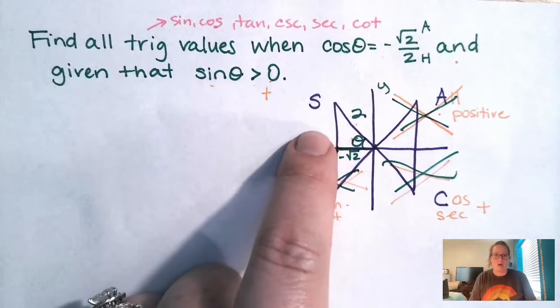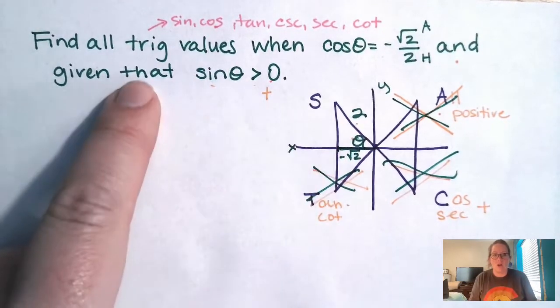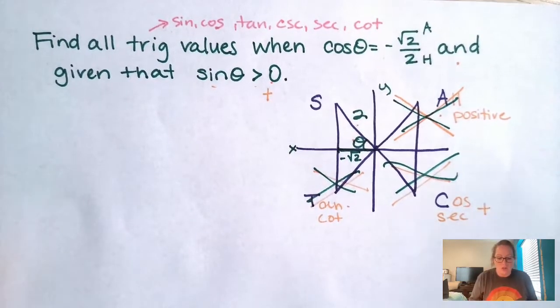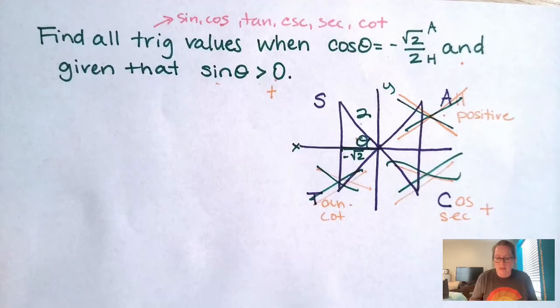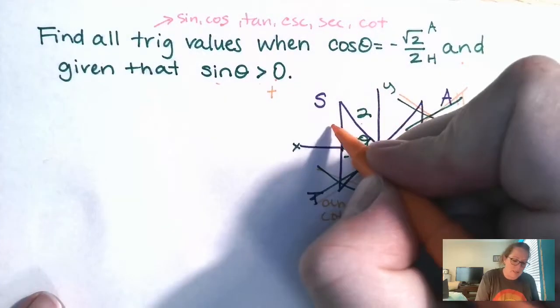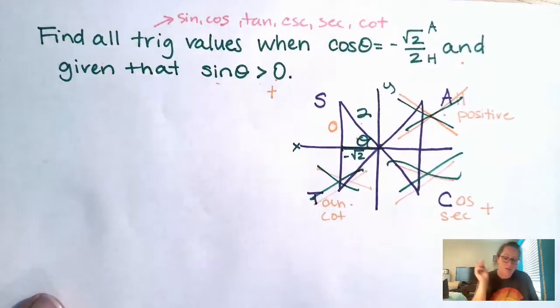Okay, how can we figure out what our adjacent is? Because we need to find all six trig values. So we have to figure out what, I think I just said adjacent, but I meant opposite. We got to figure out what our opposite is. So we got to figure out what this guy is, our O. How can we do that? It's a right triangle.